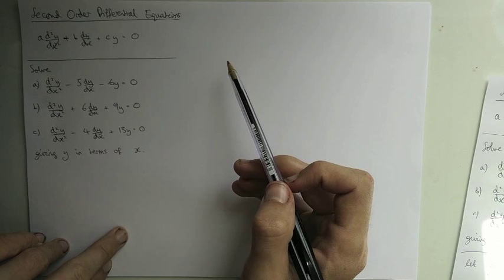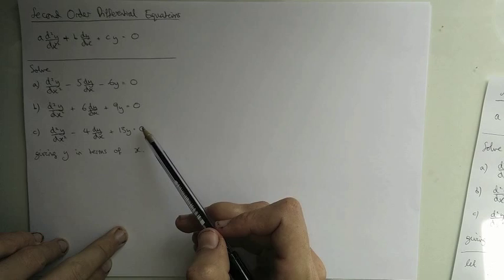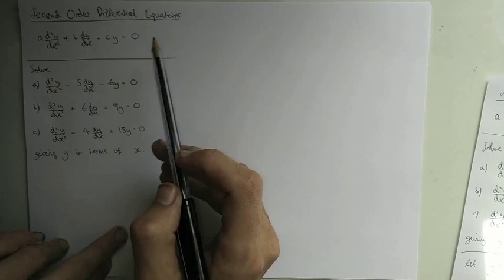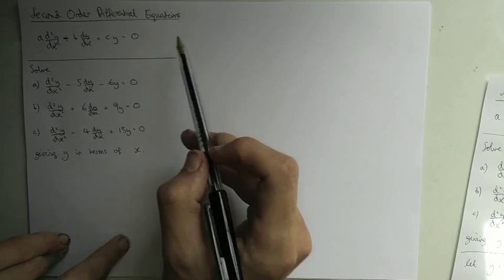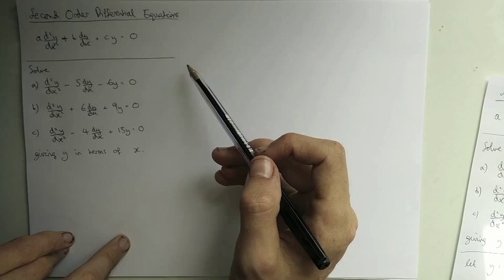Here are some examples of the kind of equations we want to solve. For example, here a is 1, b is minus 5, and c is minus 6. The ones we look at today are going to be equal to 0; ones in future videos will be equal to functions of x, but we'll deal with those later. This is the simplest second-order differential equation you can get.